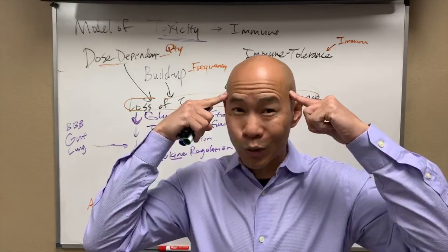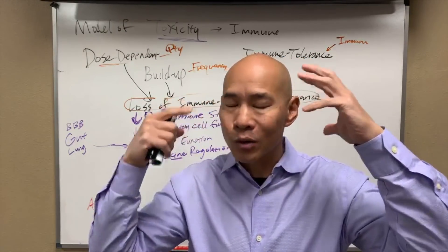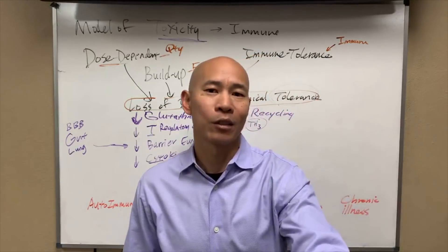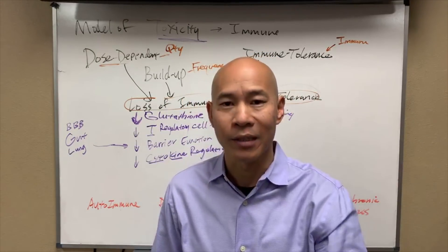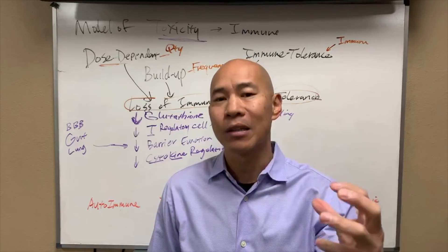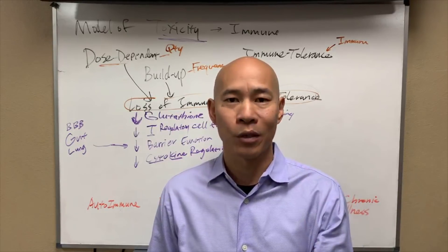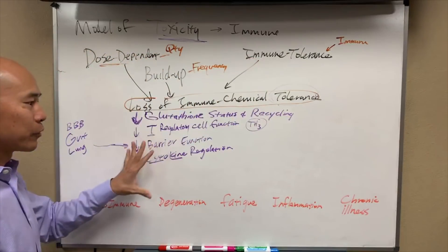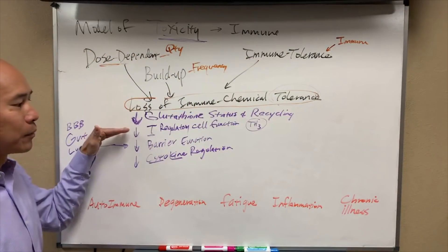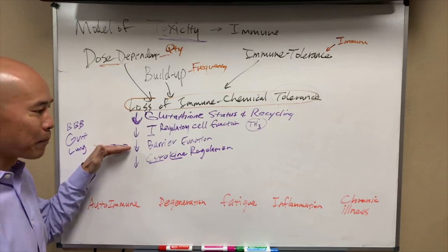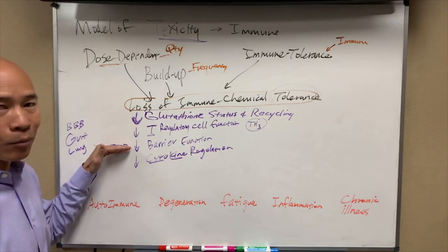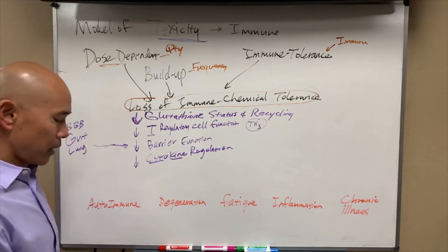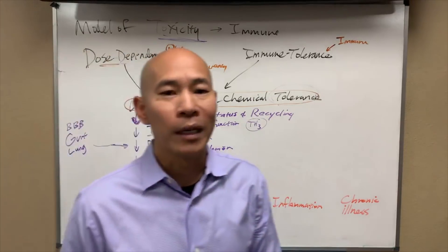The number one resource you can have is knowledge. Once you have this loss of tolerance and start to degrade glutathione, T-reg cell function, and you start to create barrier problems like leaky gut and cytokine dysregulation, what's going to happen is you're going to develop multiple sensitivities.